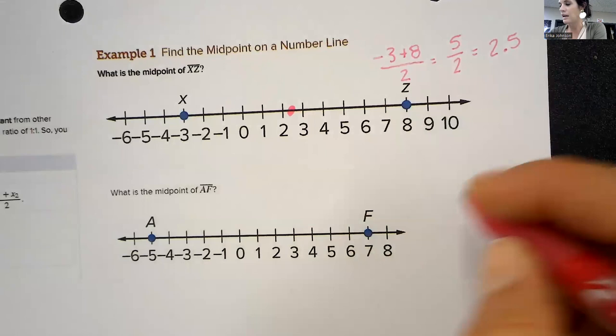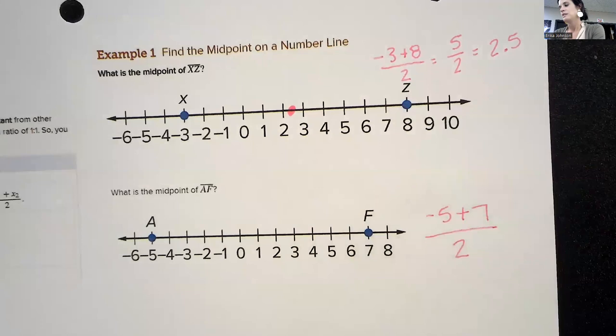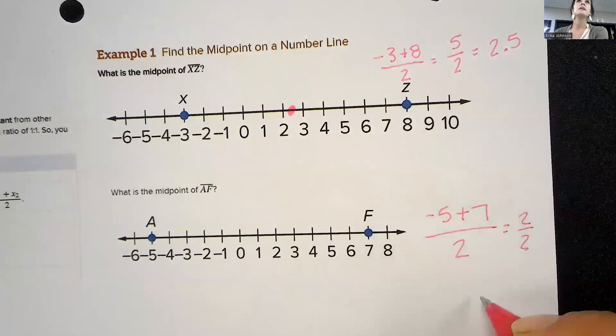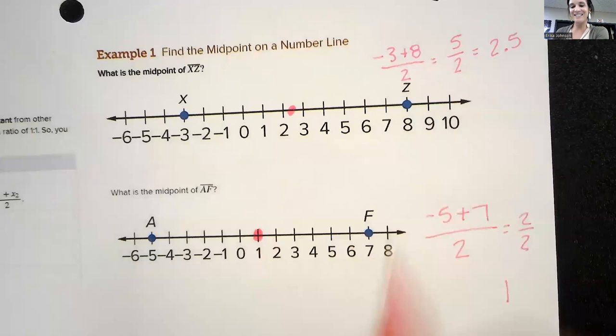So the next one, add the two you got. Negative five plus seven divide by two. Negative five plus seven is two. Two divided by two is one. So if you went halfway in between them, that's one. Is it really? We could always check it, right?